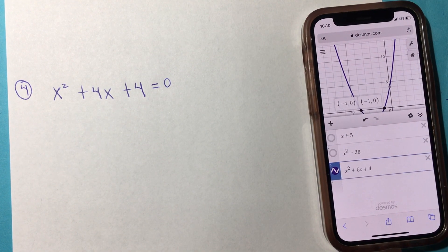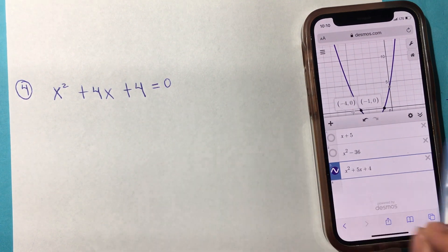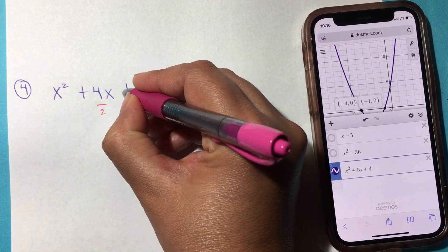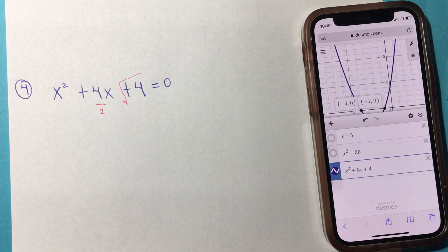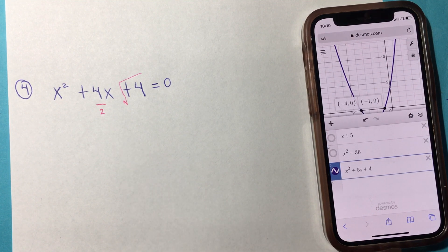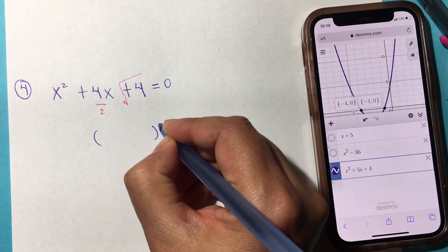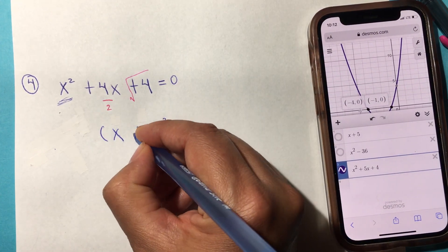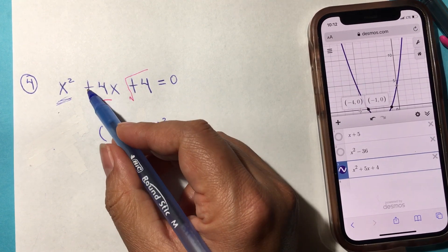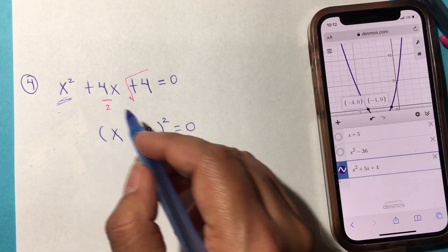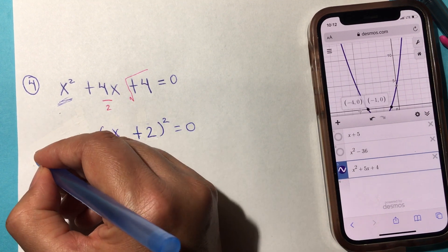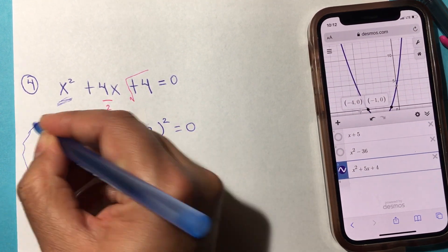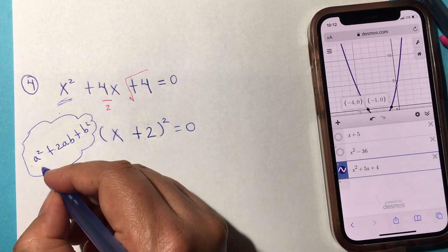Now here I want you to notice something. This is a perfect square. From previous lessons, we learned that if half of this is the same as the square root of that, then we have a perfect square. All you have to do is open your parenthesis, put a square, put the x, and 4 divided by 2 is positive 2. We keep this sign from here.